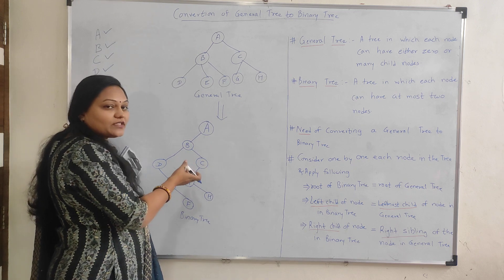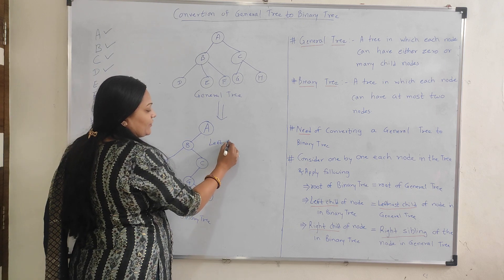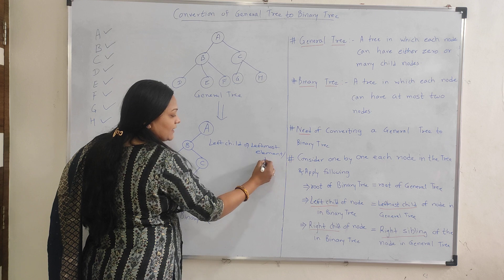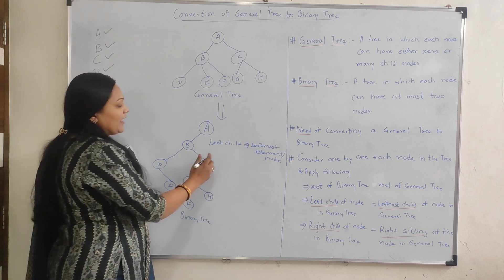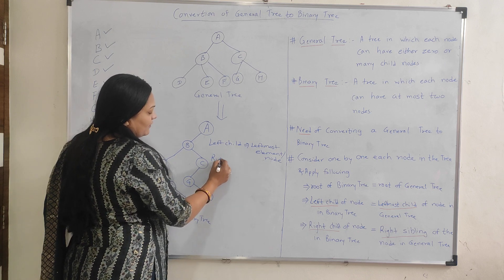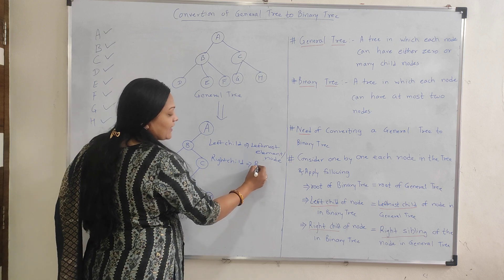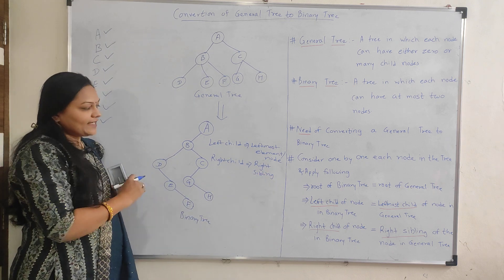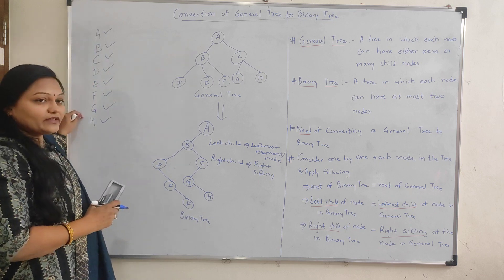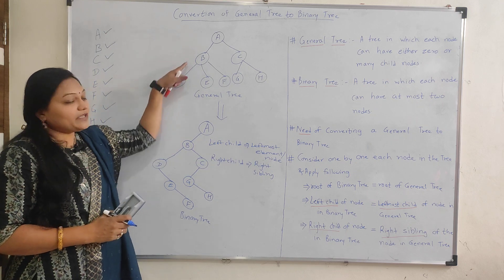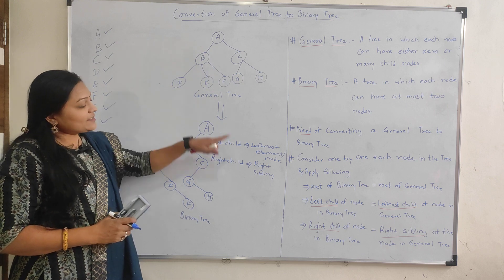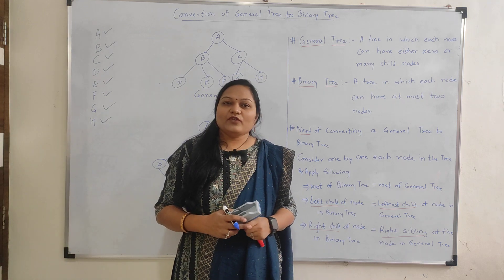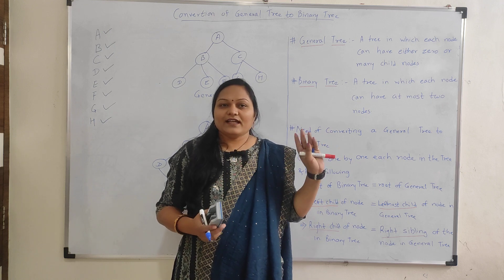To summarize: to find the left child, we consider the leftmost node of the current node in the general tree. To find the right child, we use the right sibling in the general tree. By considering all nodes one by one and applying these two rules, we can convert any general tree into a binary tree. If you like this video, please like, share, and subscribe. Take care, bye bye.